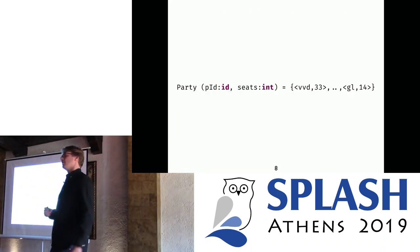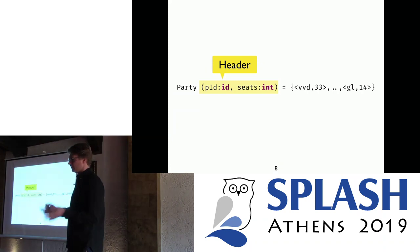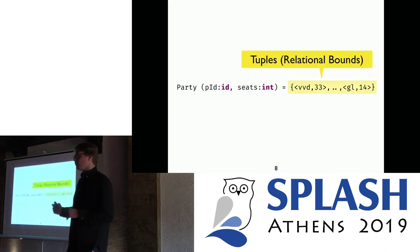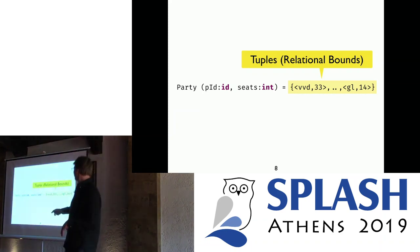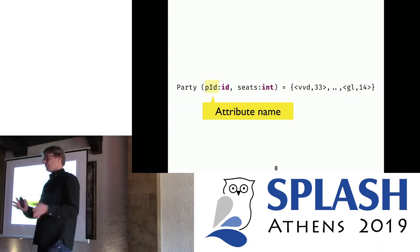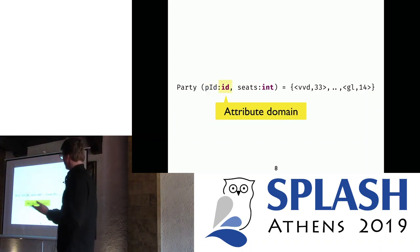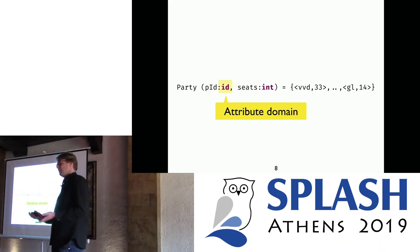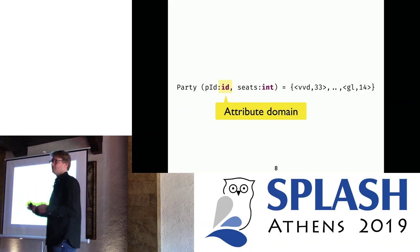Let's zoom in on how to declare relations in LALA. First, every relation has a name — it's a relational variable. In this case we define the relation 'party'. Then there's some header information specifying which attributes reside in this relation, and then there are some tuples. The header contains the different attributes: in this case, a PID and seats. The PID attribute has the type ID, which is a built-in domain — it's just a set of arbitrarily chosen labels containing exactly those values that you use in your specification, nothing more. The integer domain is the domain of mathematical integers as defined at the SMT level, mapping directly onto integers in the SMT solver.